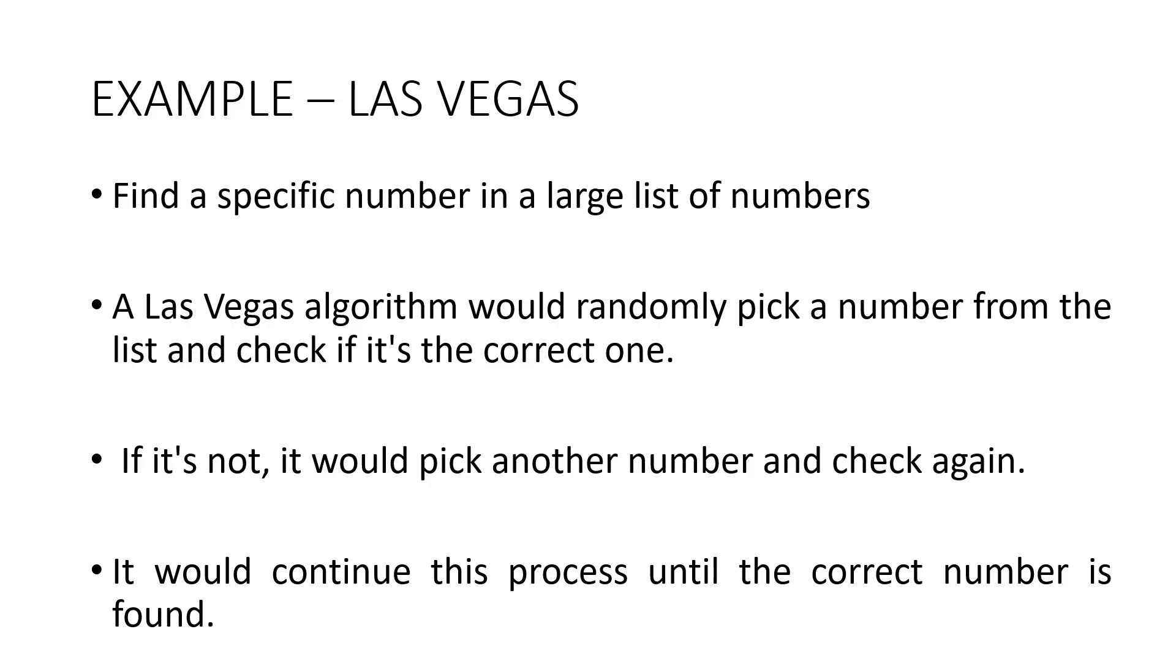Here is an example for a Las Vegas algorithm. Find a specific number in a large set of numbers. A Las Vegas algorithm would randomly pick a number from the list and check if it is the correct one. If it is not, it would pick another number and check again. This process will continue until the correct number is found.